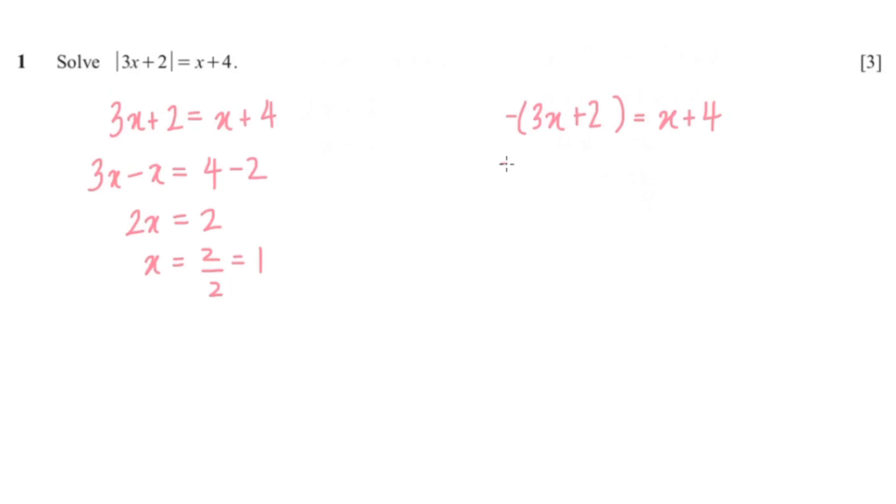And now I'm just going to expand the bracket, so that's -3x - 2 = x + 4. So now I'm going to bring x to this side, so that's -3x - x equals 4 + 2.